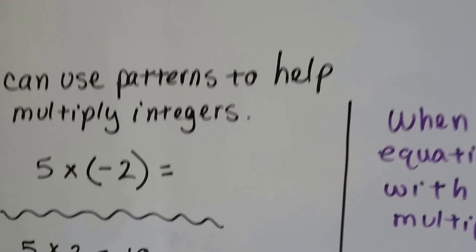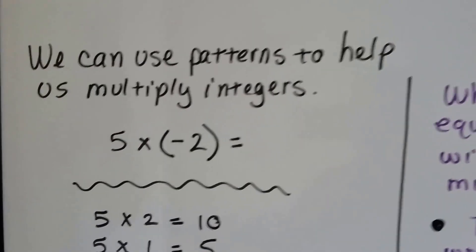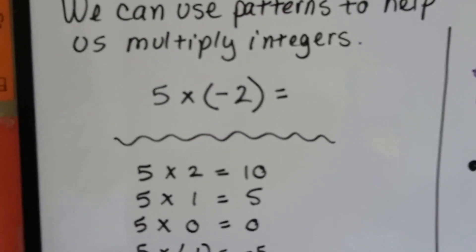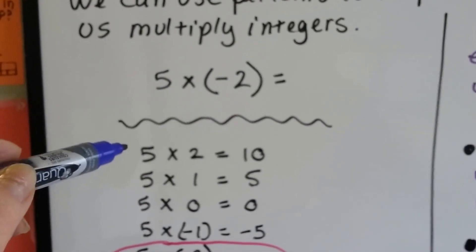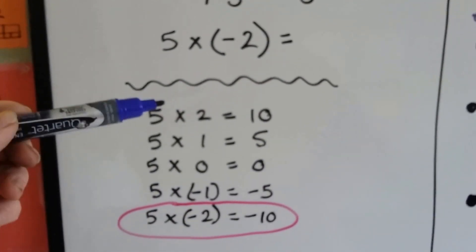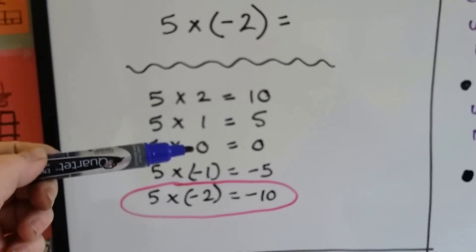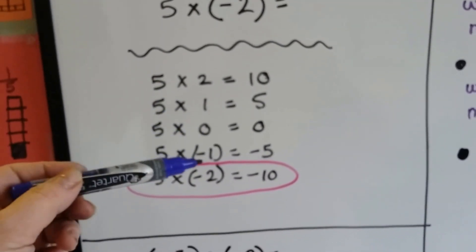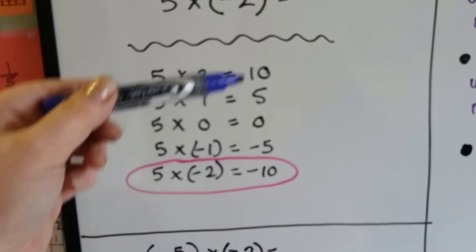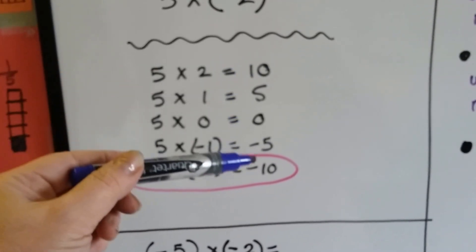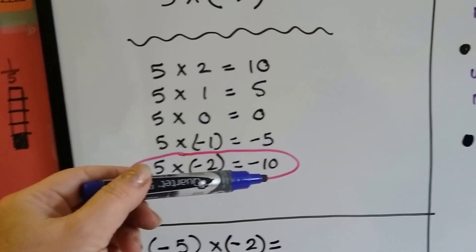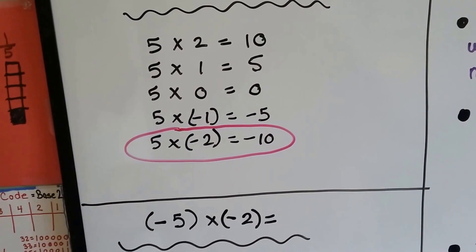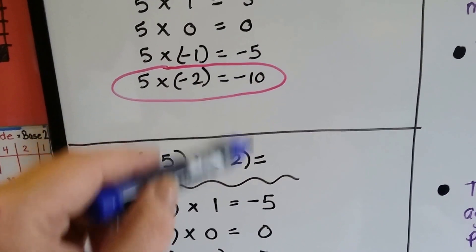We can use patterns to help us multiply integers. If we have five times negative two, we can start with five times two and slowly work our way down: five times one, five times zero, five times negative one, five times negative two. That can help us see how the product changes to a negative number. We have five negative twos, so we get negative ten.